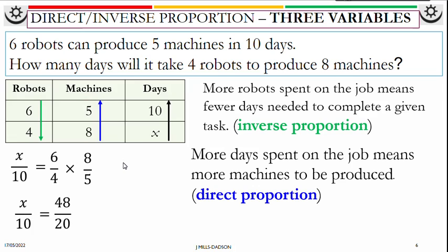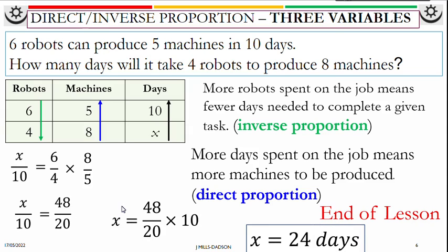Then you work it out. 48 over 20 equals X over 10. Multiply both sides by 10. Working it out, X equals 24 days.